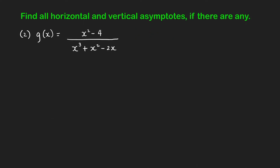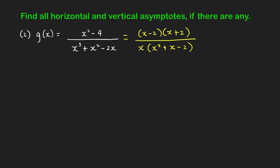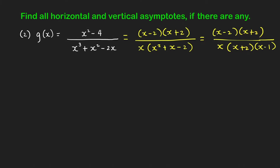Next problem. We have g of x equals x squared minus 4 all over x cubed plus x squared minus 2x. Factoring the numerator as a difference of two squares gives x minus 2 times x plus 2. Factoring out x from the denominator gives x times x squared plus x minus 2, and then that trinomial factors further as x plus 2 times x minus 1. We see a common factor of x plus 2 between numerator and denominator, so we cancel it, giving the simplified expression x minus 2 over x times x minus 1, provided x is not equal to negative 2.